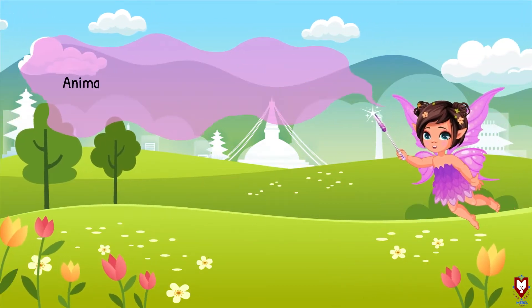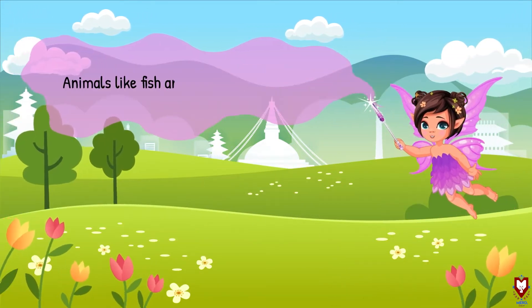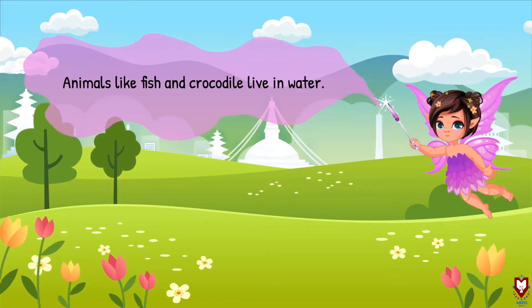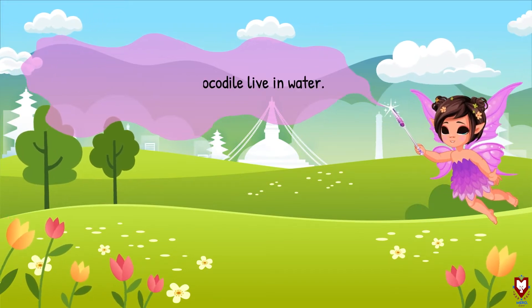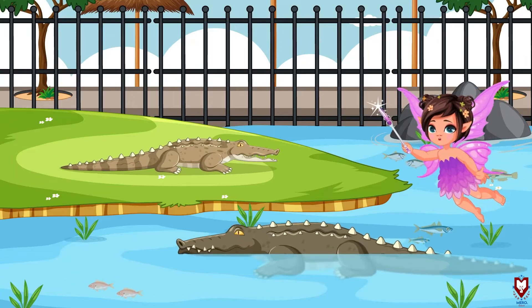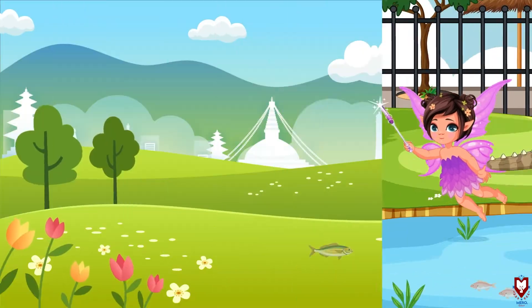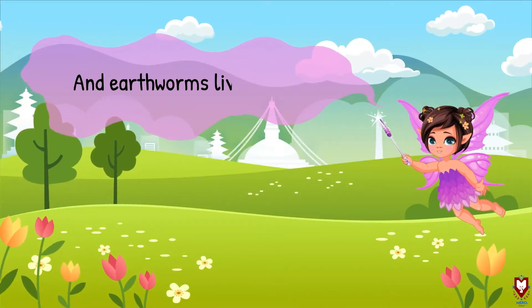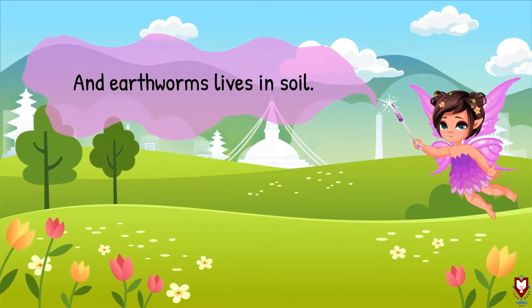Animals like fish and crocodile live in water. An earthworm lives in soil.